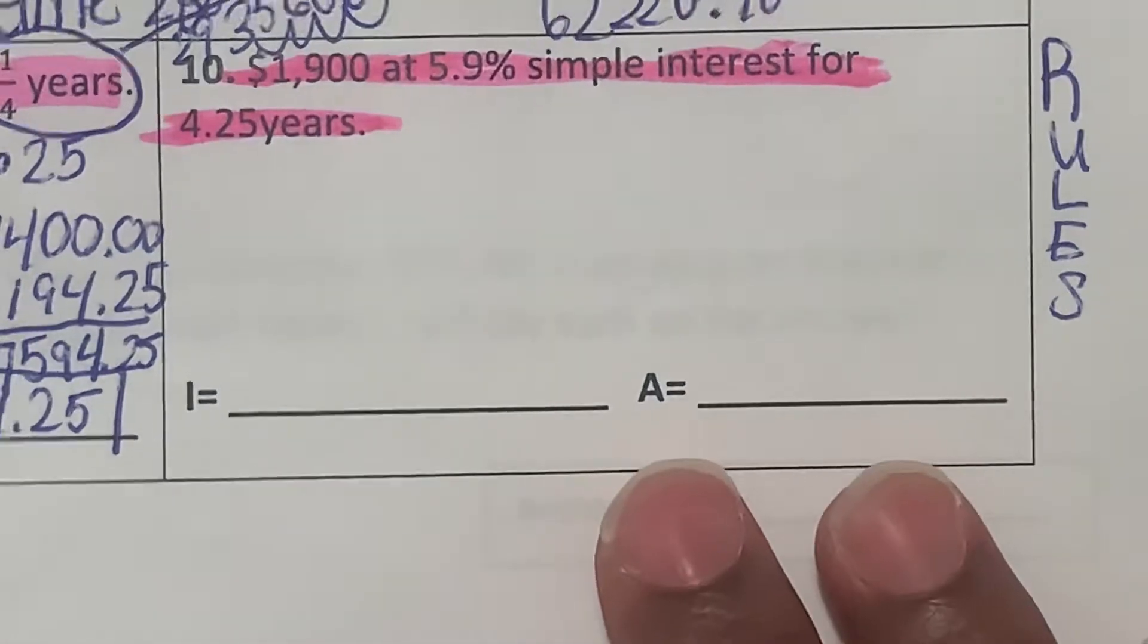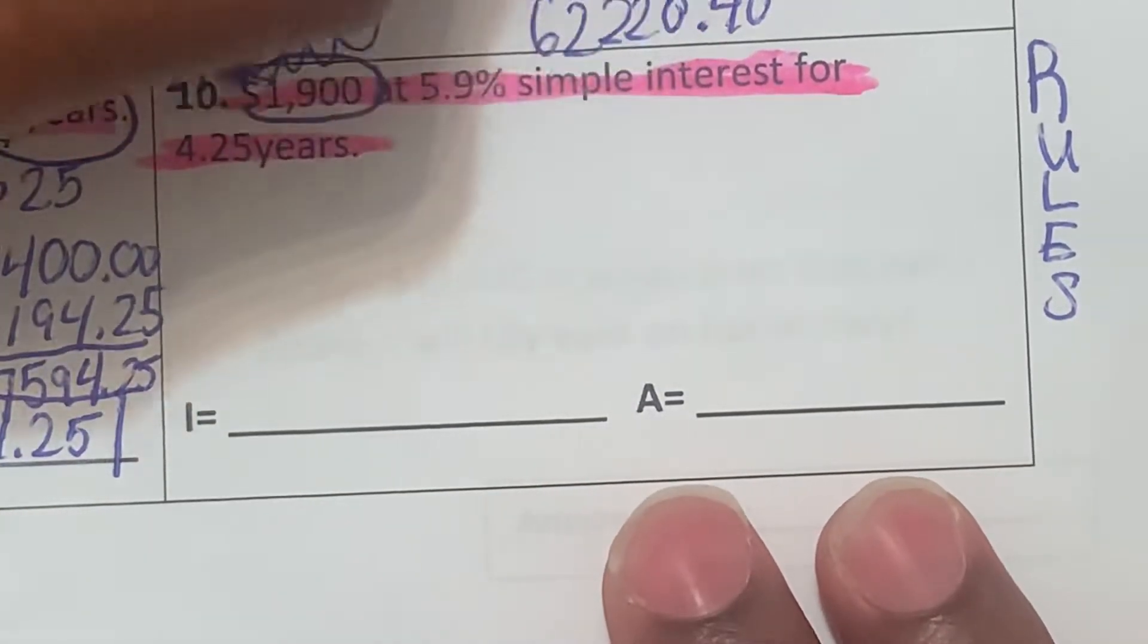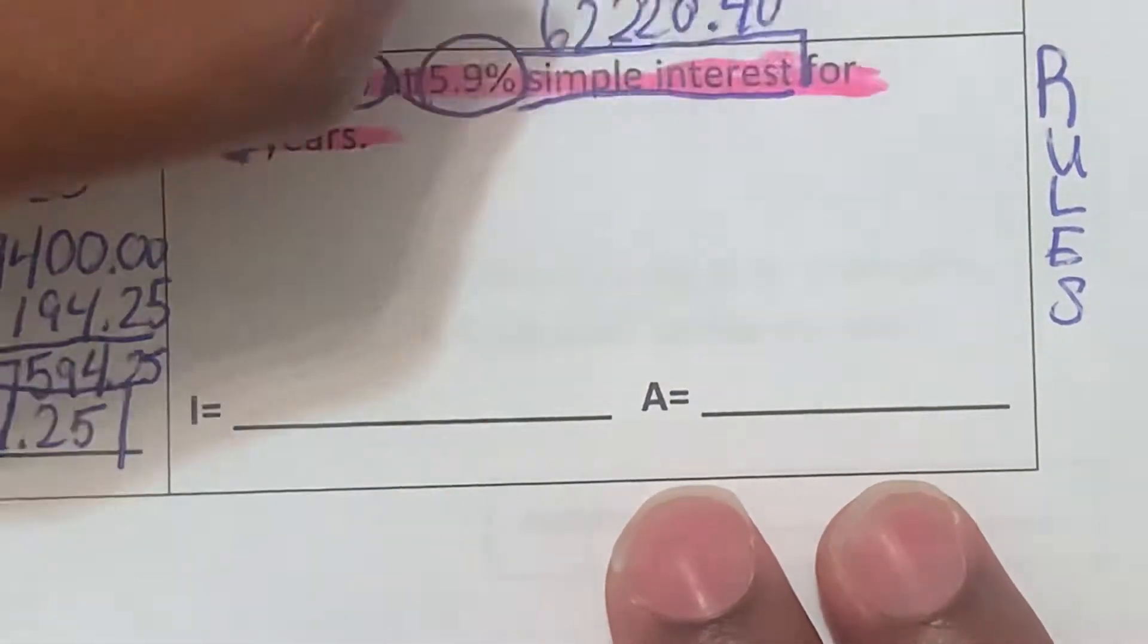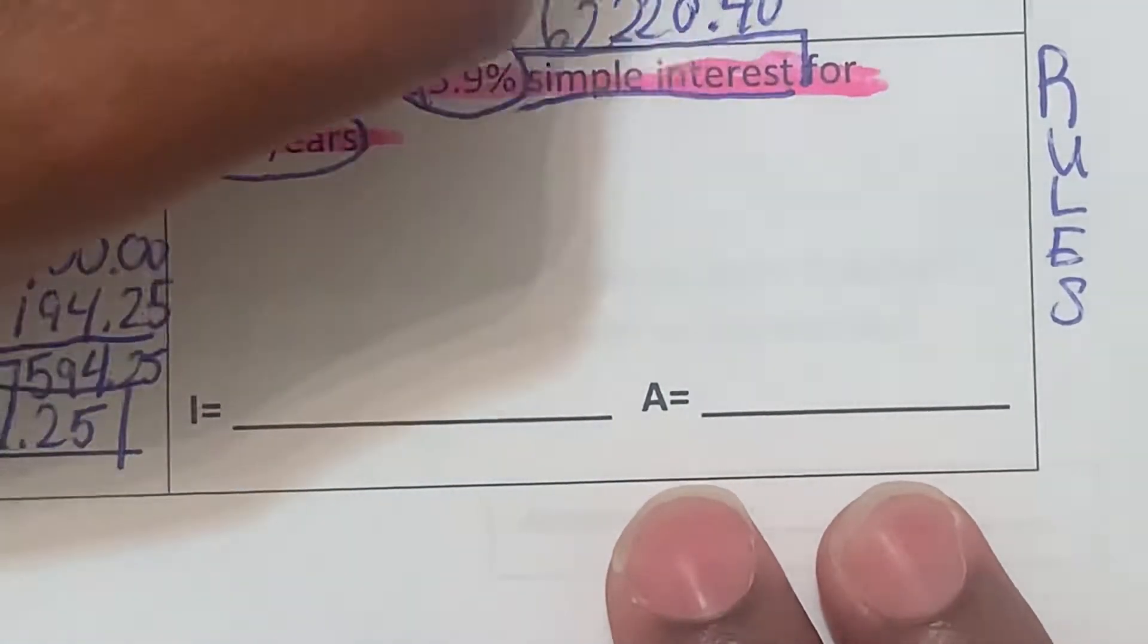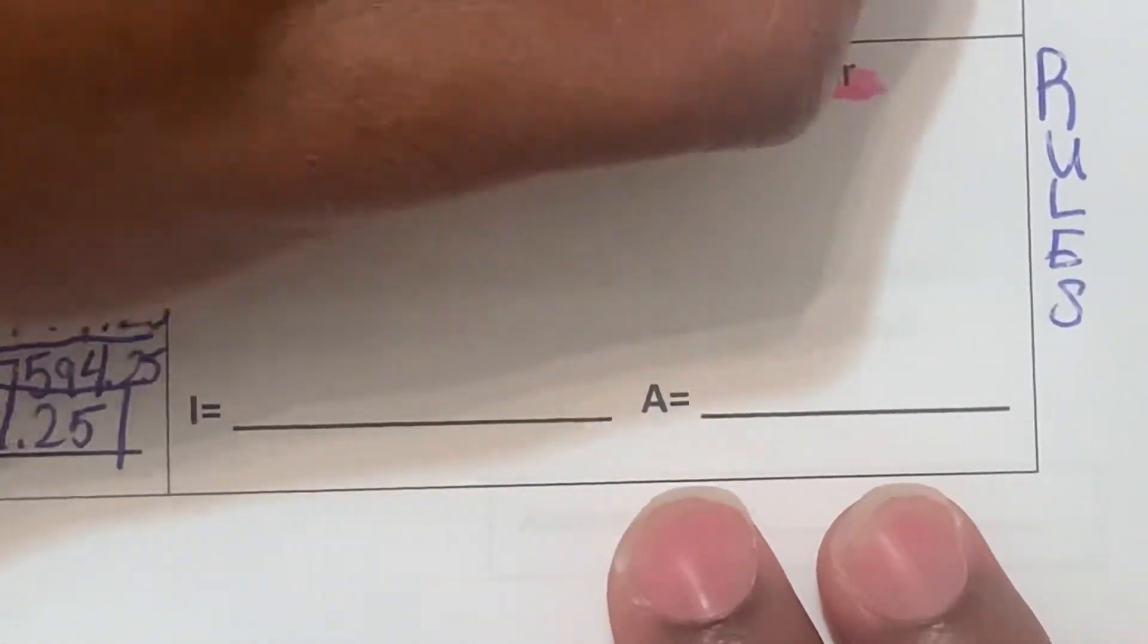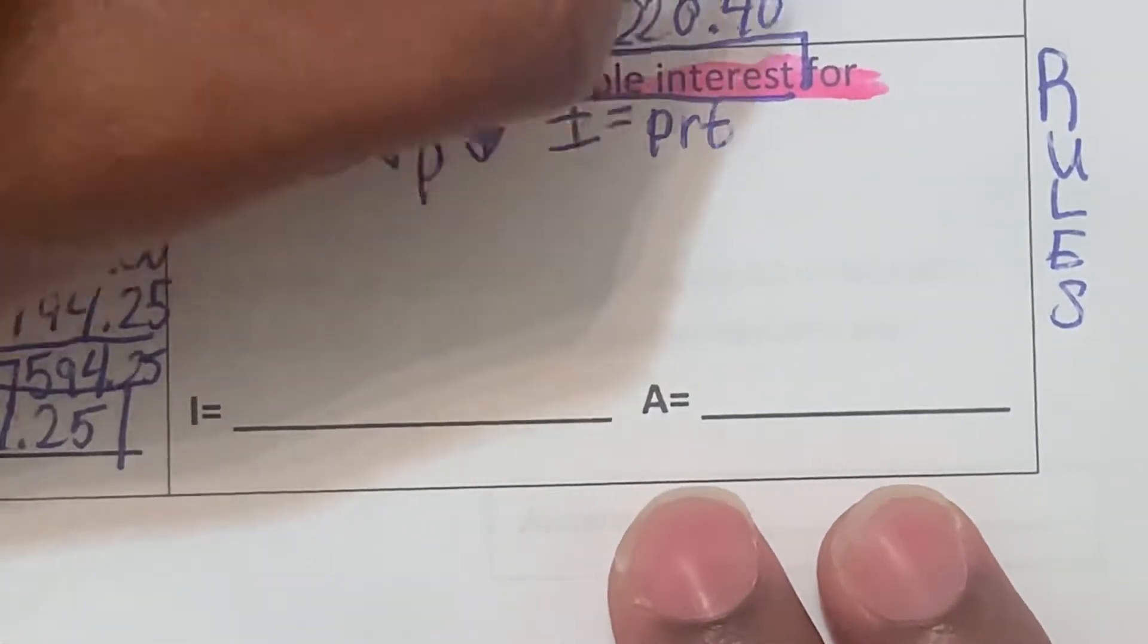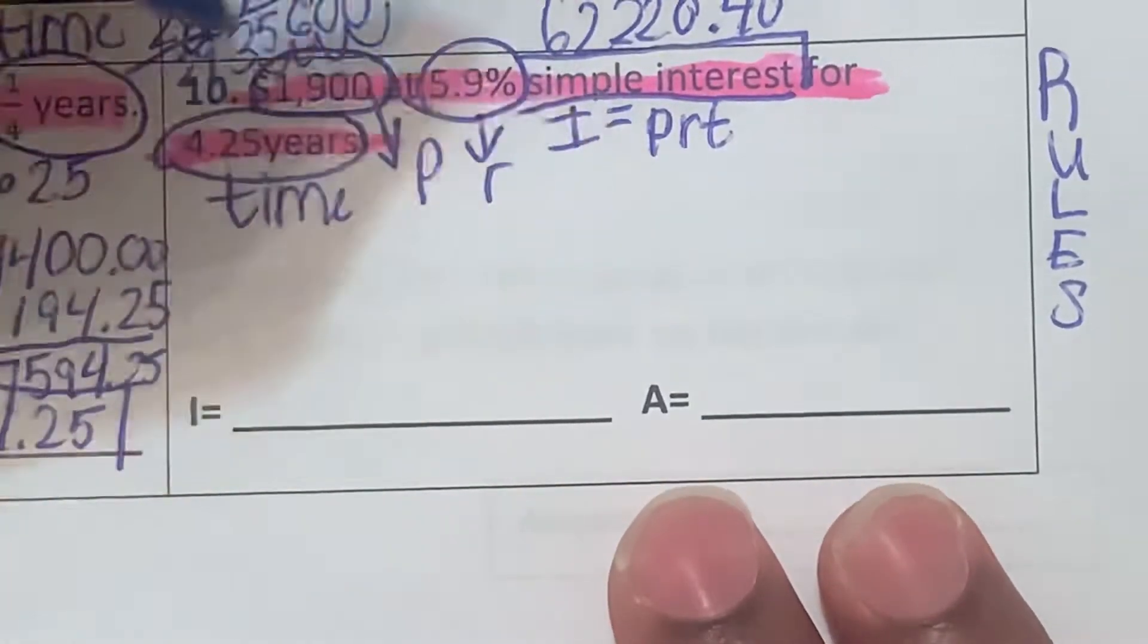So let's highlight the specific question or underline: $1,900 at 5.9% simple interest for 4.25 years. We got $1,900, 5.9% simple interest for 4.25 years. So remember, the simple interest tells us the interest equals the principal times the rate times the time. That's our principal amount, that's our rate, that's our time.